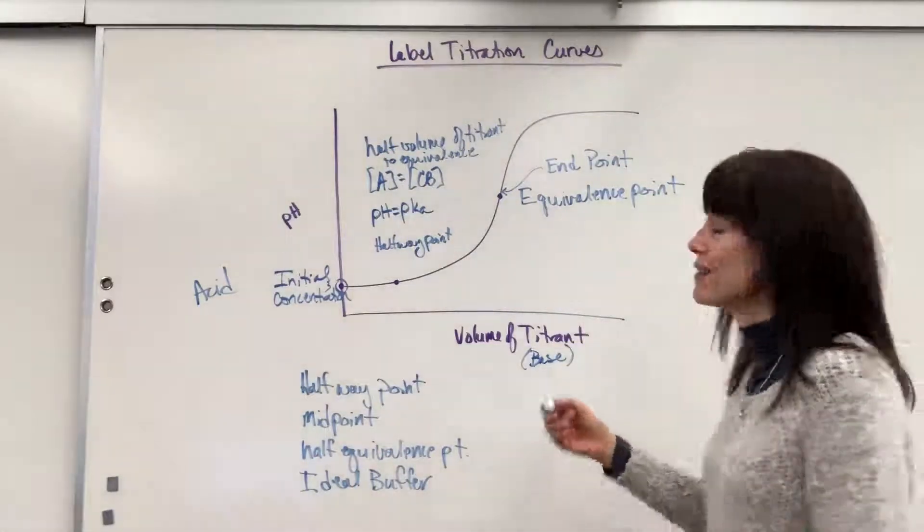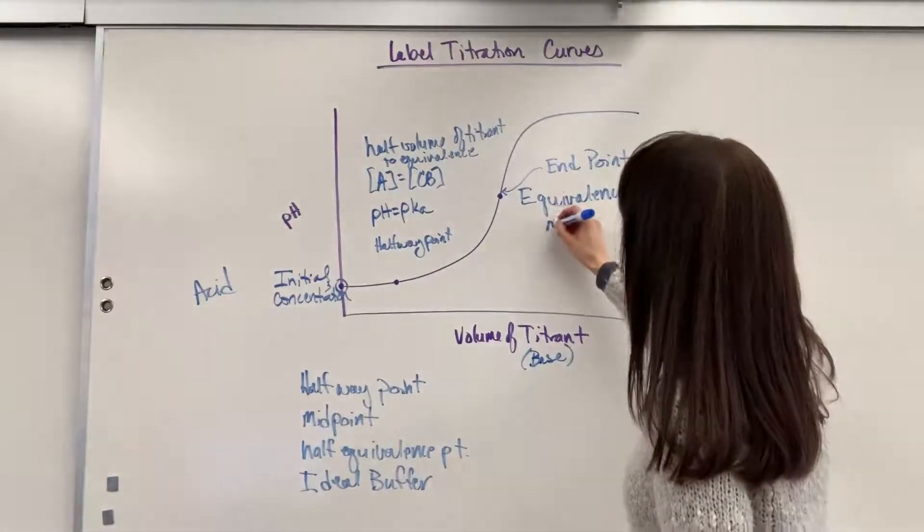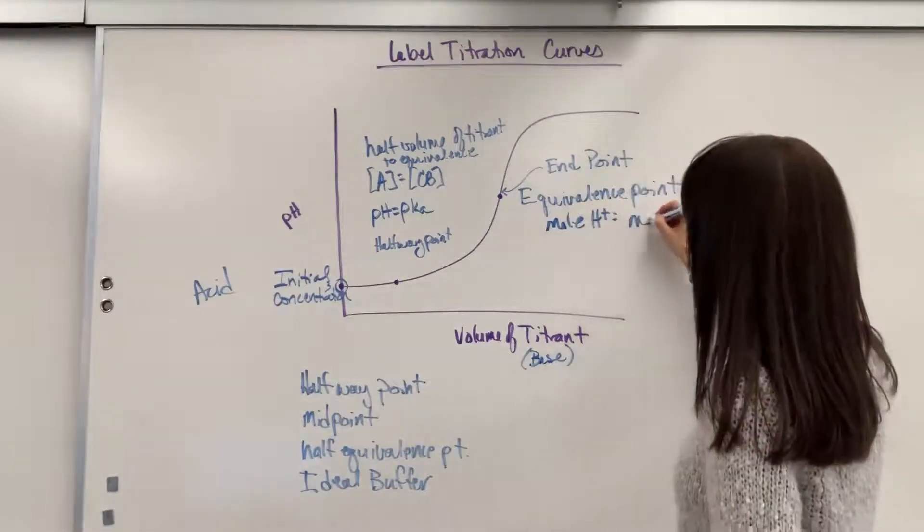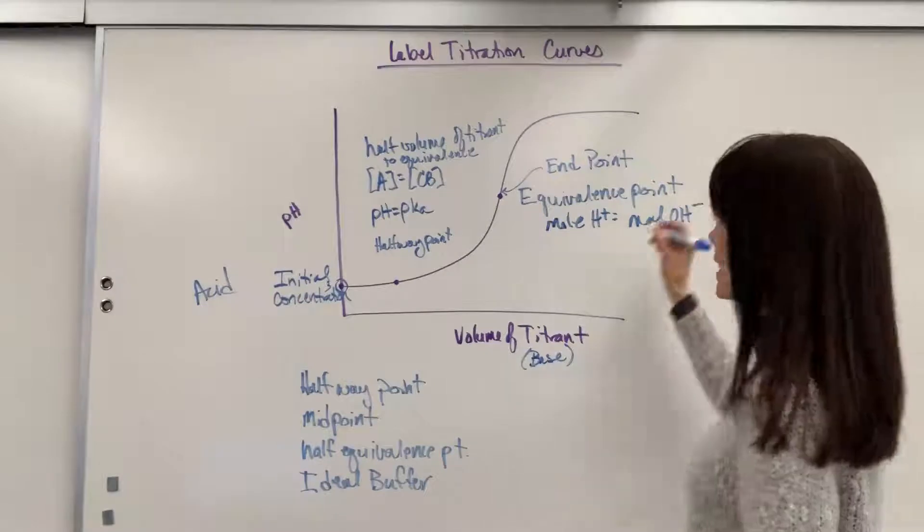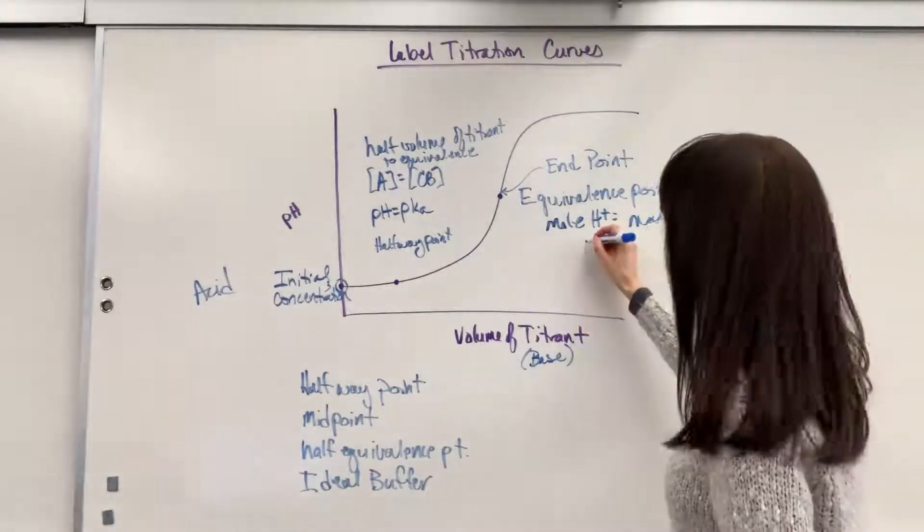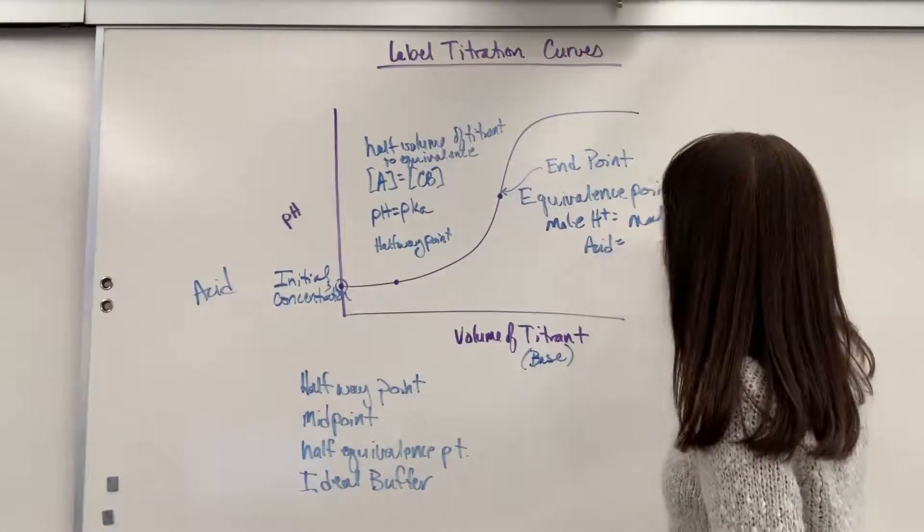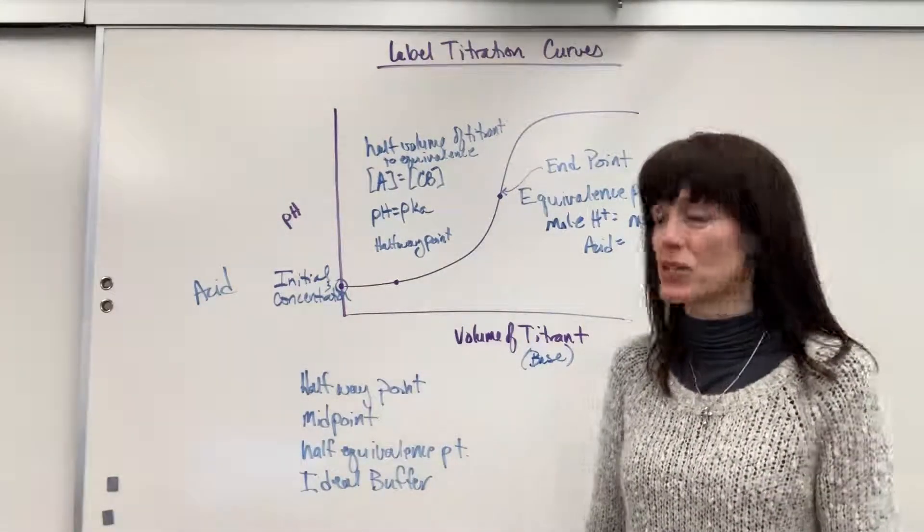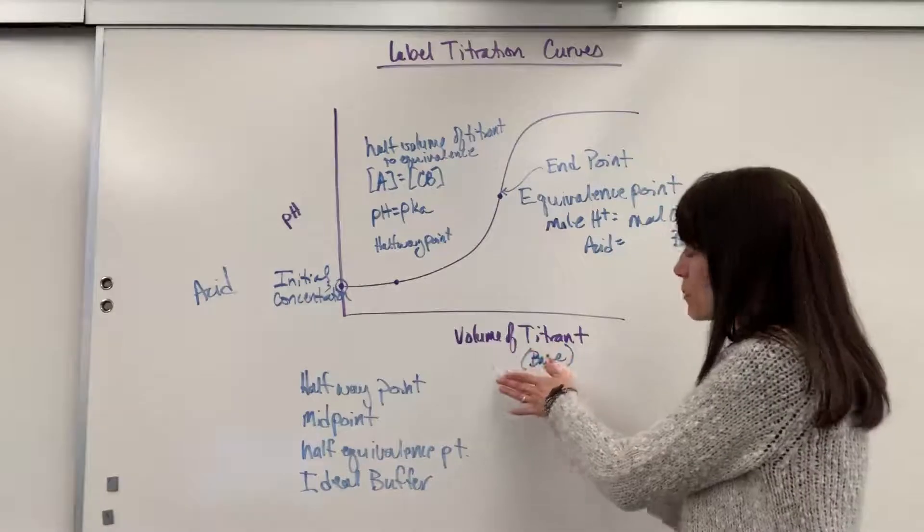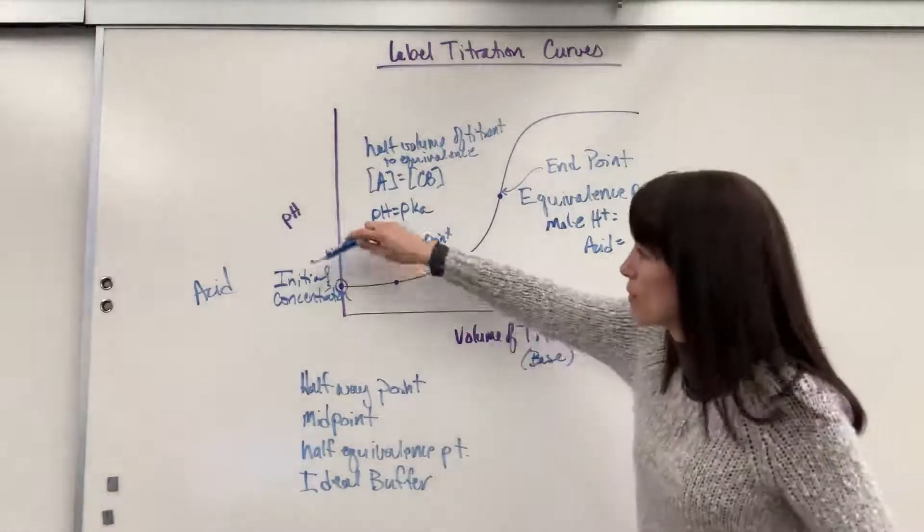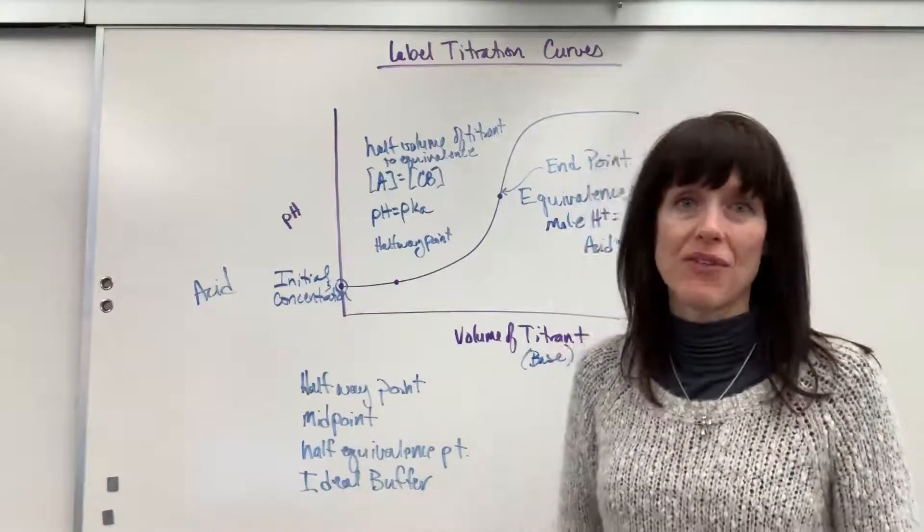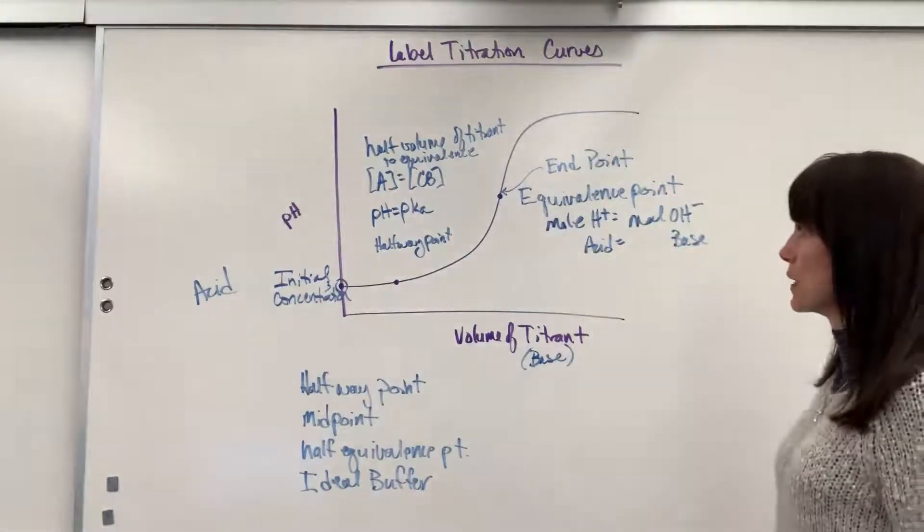And you'll recall that the equivalence point is when the moles, really important, is the moles of that hydrogen ion equals the mole of the hydroxide ion. So in essence, it's the mole of the acid equals the mole of the base. Super special. That when we add the exact amount of the moles of the base to equal the amount of moles of the acid that you began with in that Erlenmeyer flask. And that's the equivalence point.